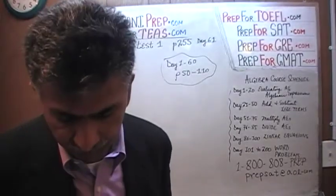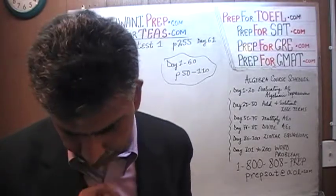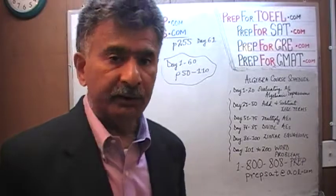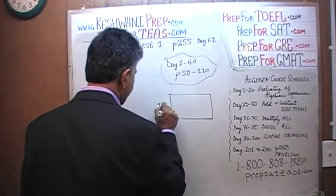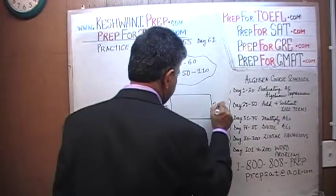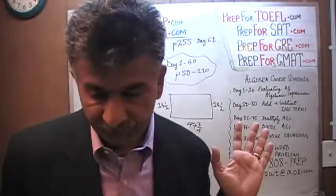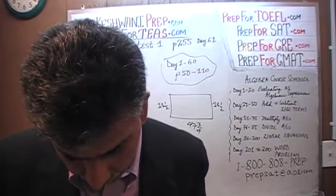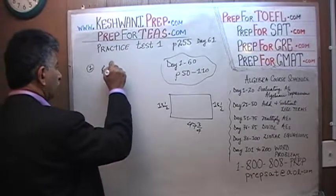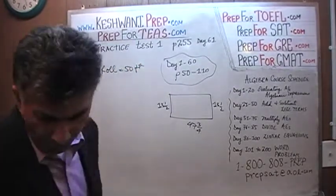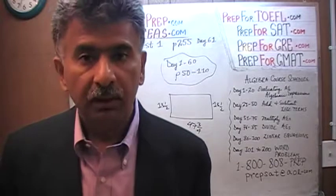So we go to page number 255. The very first one says: a man is putting a fence around his rectangular yard. His lot measures 13 and a half by 47 and 3 quarters. So here is his yard — 13 and a half by 47 and 3 quarters. The fencing comes in a roll of 50 feet. Which of the following is the number of rolls of fencing the man will need to buy?